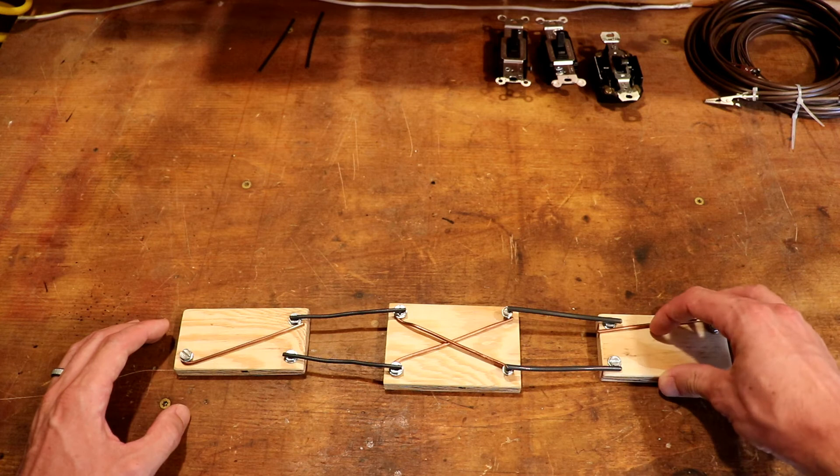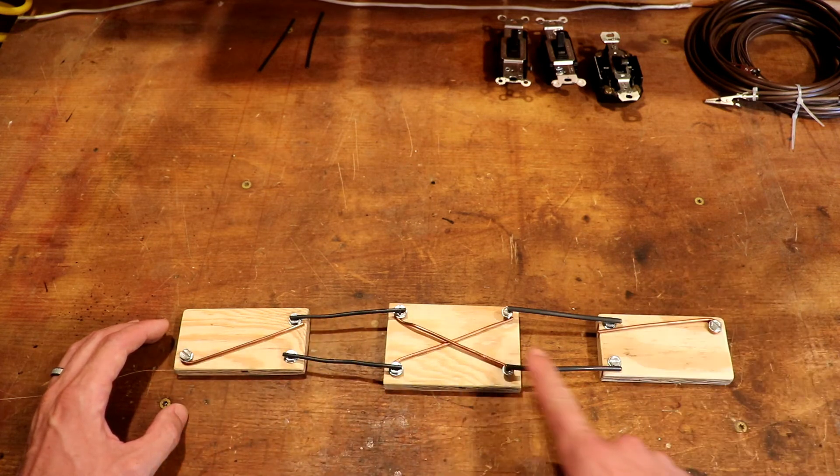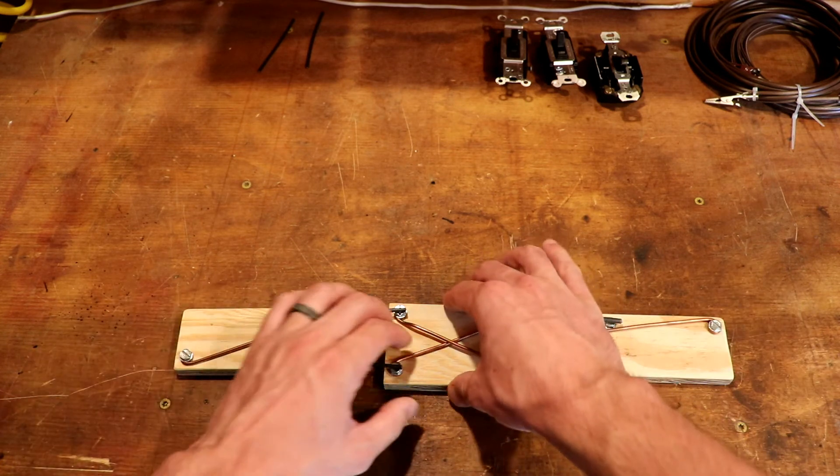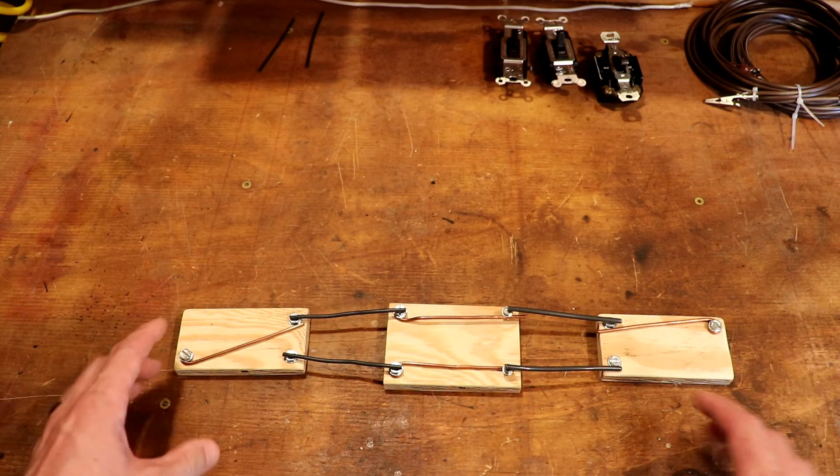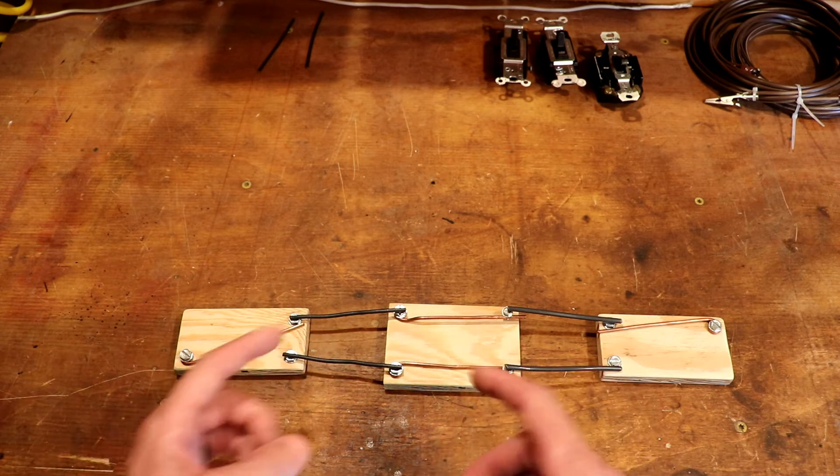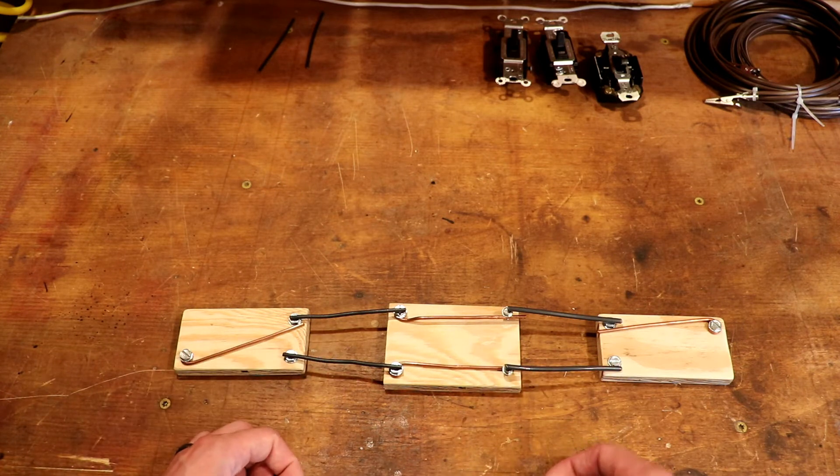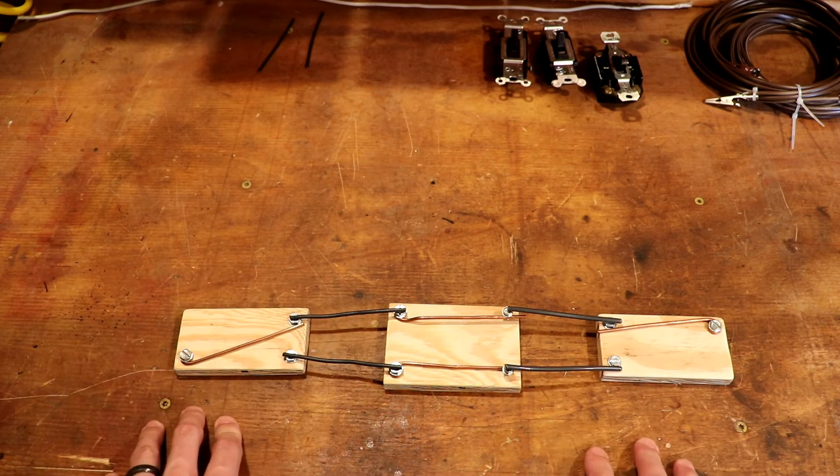Light is on. We could flip this and now it would be off. We could flip this middle switch back on. Again, we could stand here all day long in our hallway and flip any combination of these three switches and have our light turn on and off with each flip of the switch.